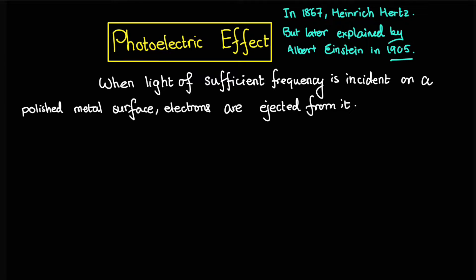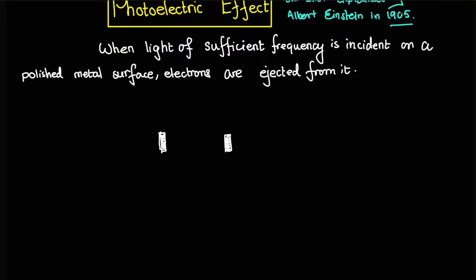Now what really is this effect? In order to describe that, we would have to use this particular diagram. In this diagram, you see, we use two metal surfaces that are very polished. This is our metal surface, and in between these two metal surfaces, we connect an electric circuit.